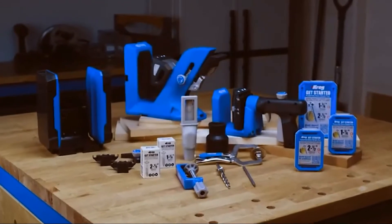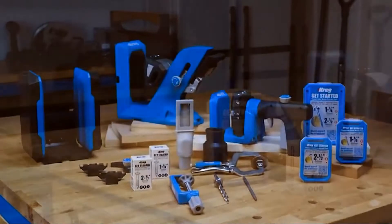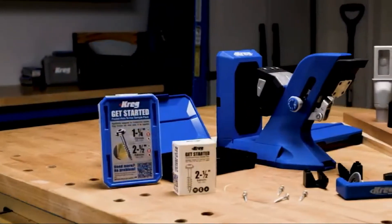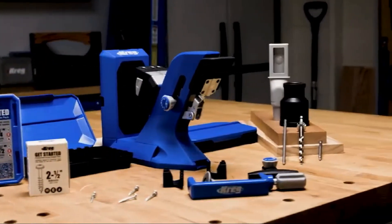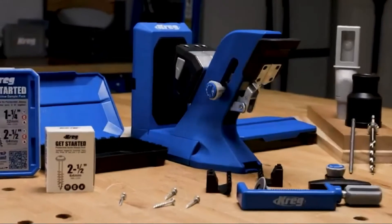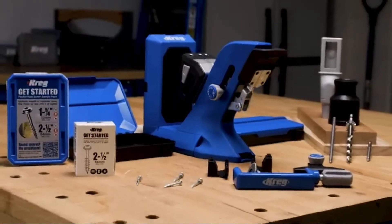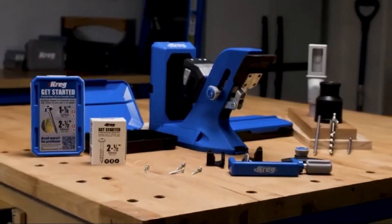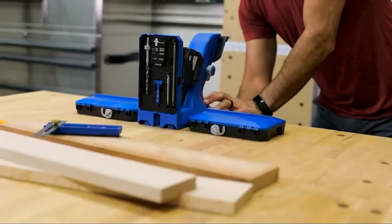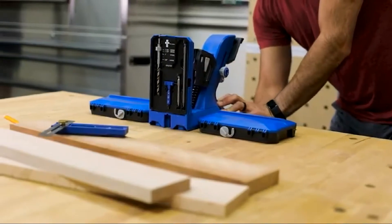And to help you achieve project results that are even better. The Kreg pocket hole jig 720 Pro is the most advanced pocket hole jig yet, packed with features that make it possible to build projects faster and more efficiently than ever. It's the fastest, most efficient pocket hole jig and comes with everything you need.